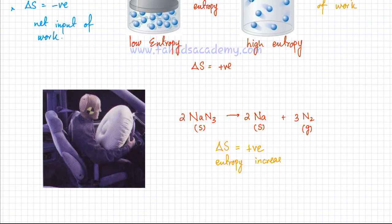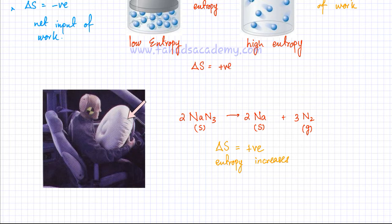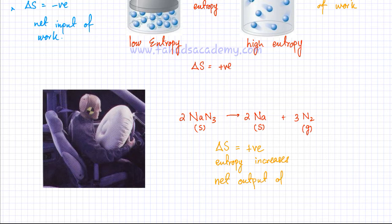Whenever entropy increases, the nitrogen gas is going to push the driver back. All the work done would be by the system — by the sodium azide decomposing and producing nitrogen gas. As entropy increases, work is done by the airbags; no work is being done on the airbags. There is a net output of work. So whenever delta S is positive, there is going to be a net output of work.